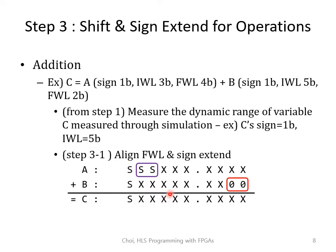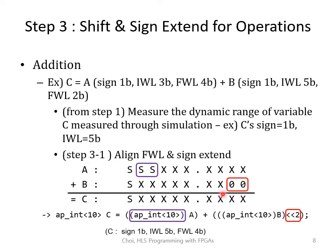Now let's make it into C code. For aligning the fractional bits in variable B, you can left shift by 2 bits. For sign extension in variable A, you can do a typecasting into a larger integer. Variable C has one sign bit, IWL of 5 bits, and FWL of 4 bits, so that's why we're typecasting to ap_int<10>. You should do this for both variables A and B. Note that adding 2 zeros to B means information from the last 2 bits of variable A may not be necessary in some cases.